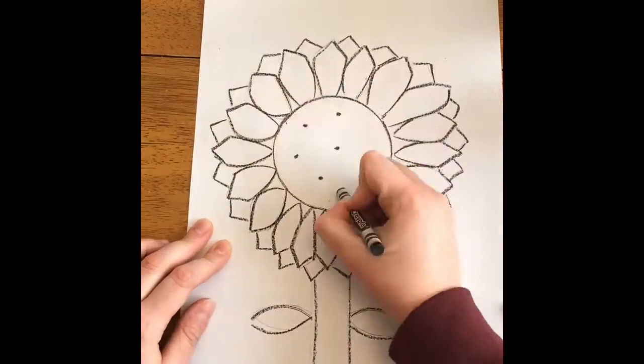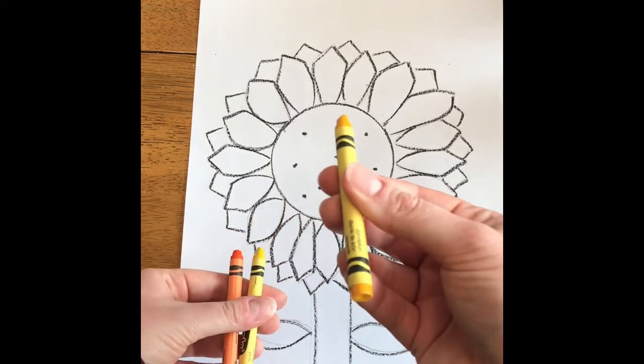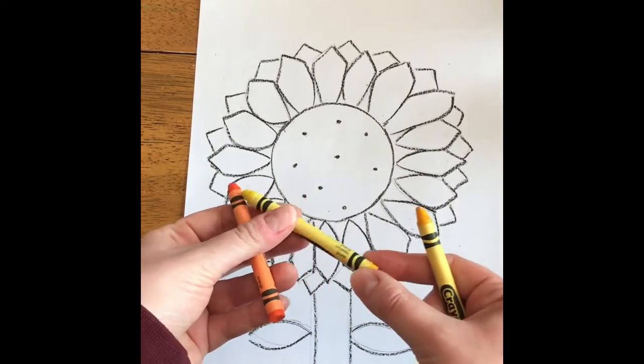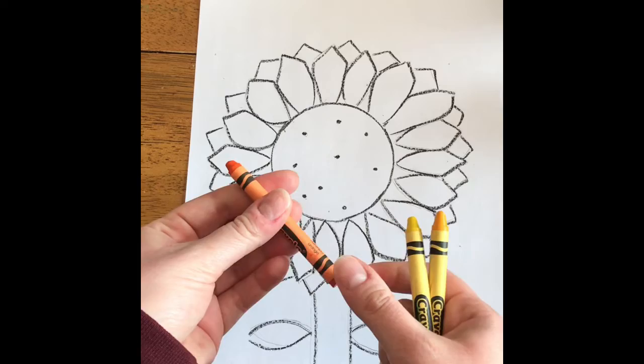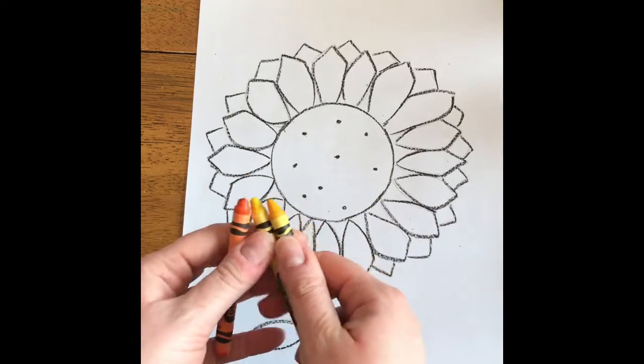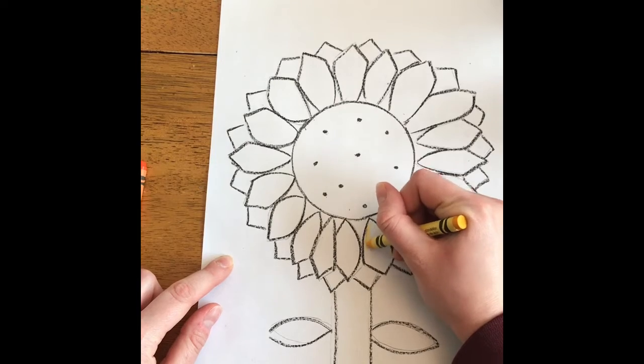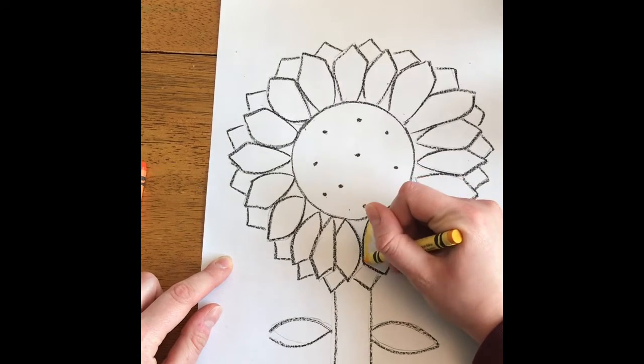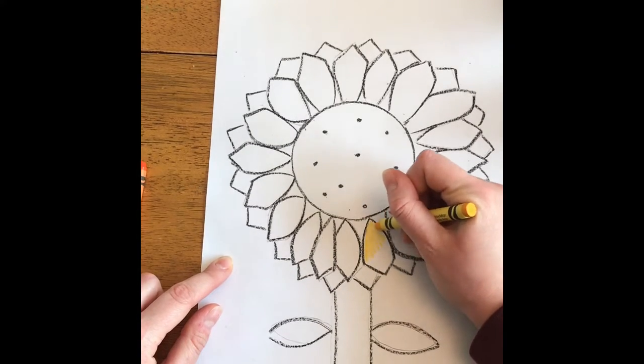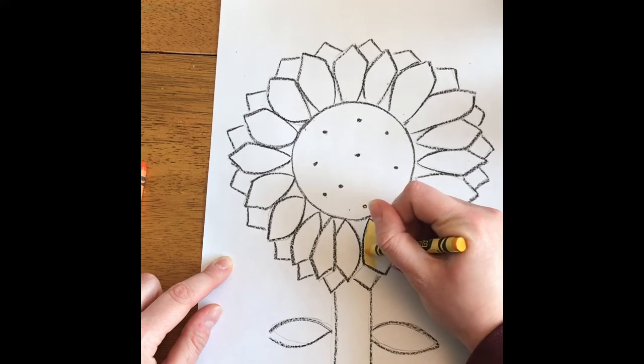And then once you're done tracing in black, you can add a couple little dots in the center to have sort of a texture. I'm going to show you three different options for coloring here. You could use a golden yellow, you could just use a regular yellow, or orange, whatever you have at home. You could actually use a combination of all three if you would like to, and that's what I'm going to do.